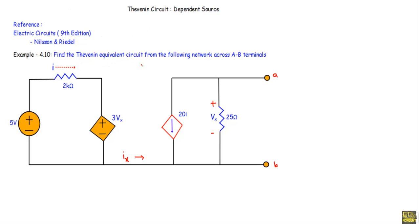Find the Thevenin equivalent circuit from the following network across AB terminals. This is the A terminal and this is the B terminal. We have to reduce this entire network to a Thevenin equivalent circuit — that means we will have A and B terminals and reduce the entire network to a single resistor RTH.